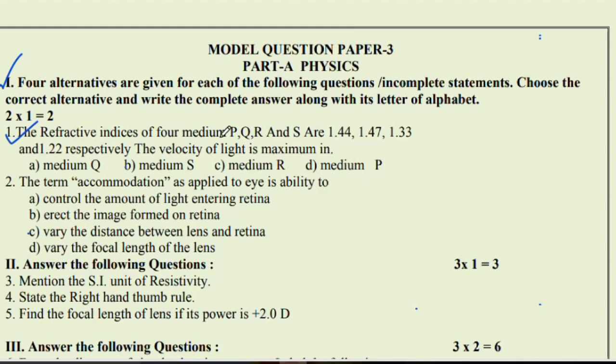Question number 1: The refractive indices of four medium P, Q, R, and S are 1.44, 1.47, 1.33, and 1.22 respectively. The velocity of light is maximum at 1.22. Therefore option B, medium S is the right answer. The term accommodation as applied to the eye is ability to vary the distance between lens and retina. So option C is the right answer.